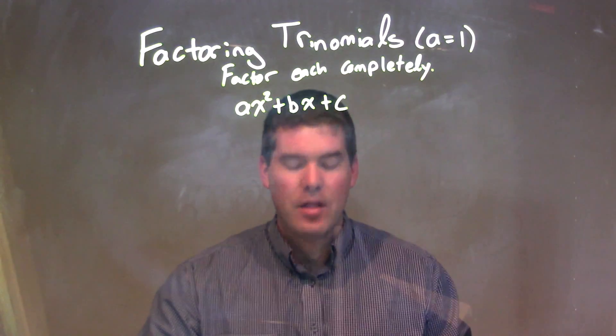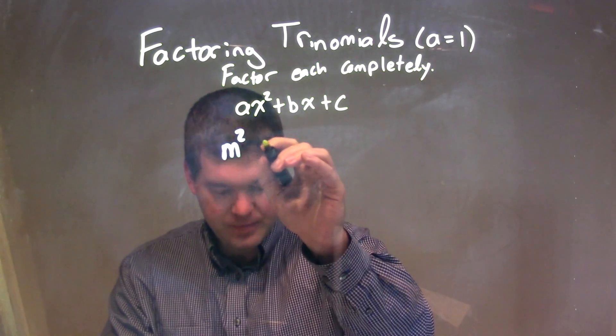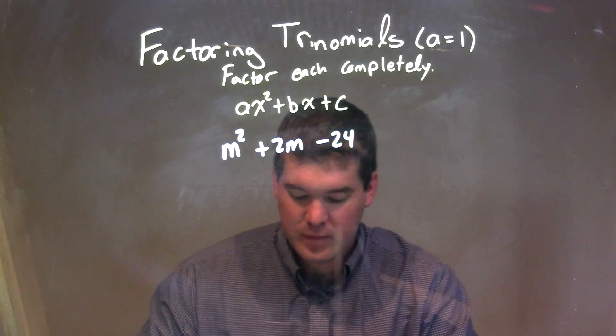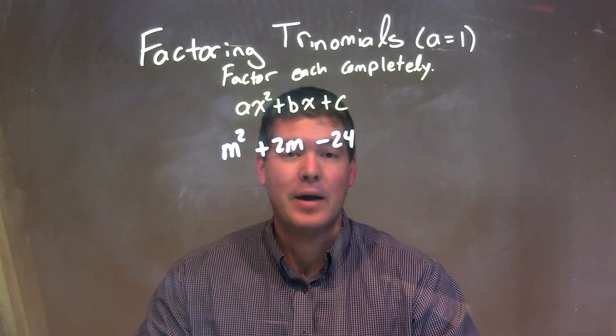So if I was given this trinomial m squared plus 2m minus 24, okay? M squared plus 2m minus 24.